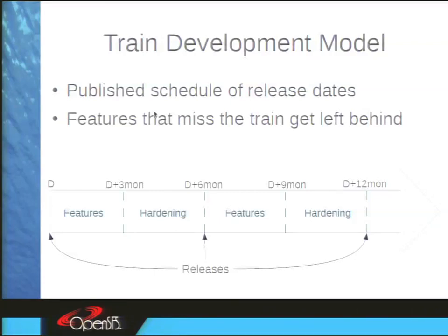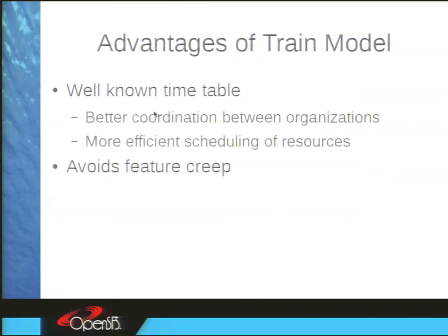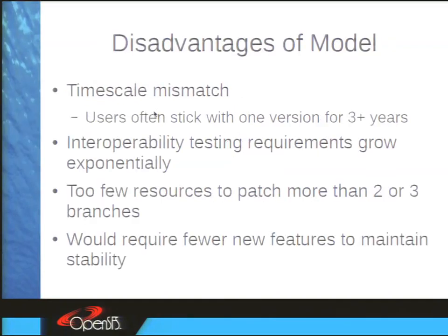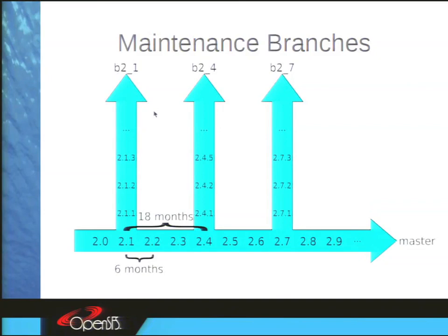The obvious advantage is that if everyone knows what's going in and when, we know when the release dates are going to be, and we can plan new products based on releases with certain features. By having a strict time schedule rather than releasing whenever we think it's ready, you avoid feature creep. We create maintenance branches every 18 months to satisfy users who need to run a stable release for years.